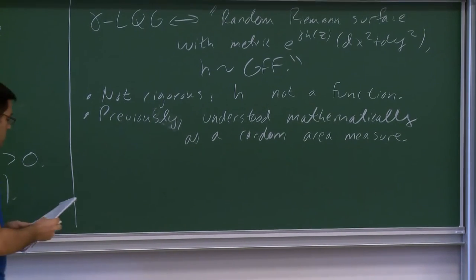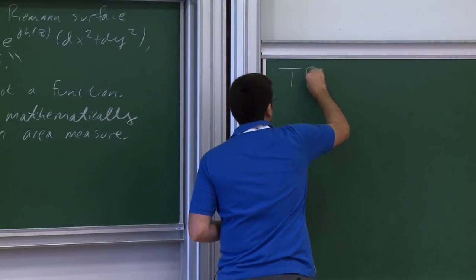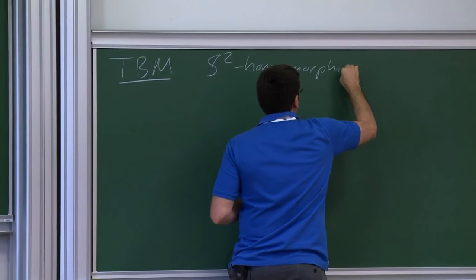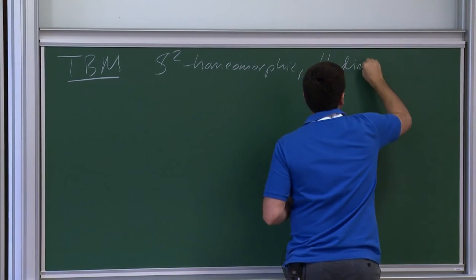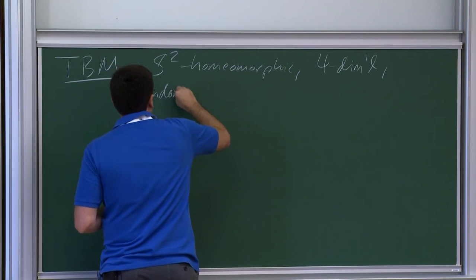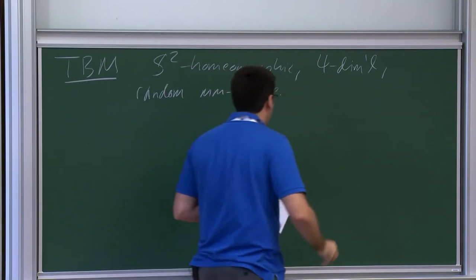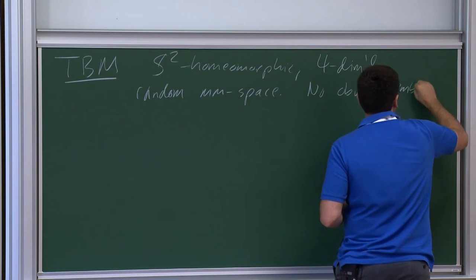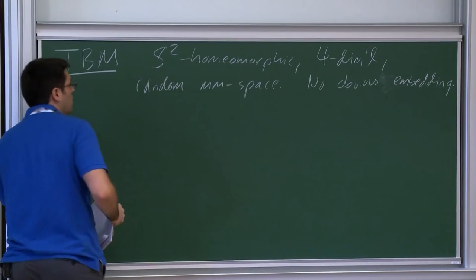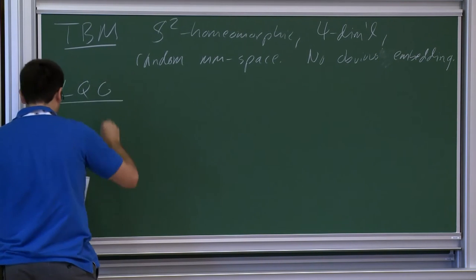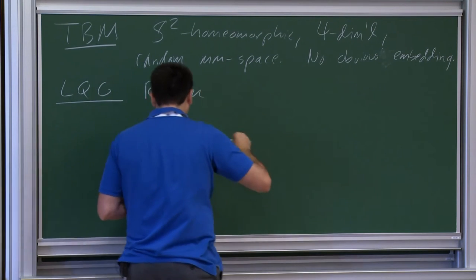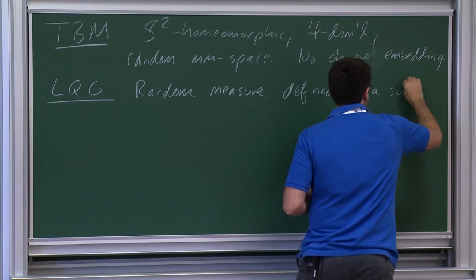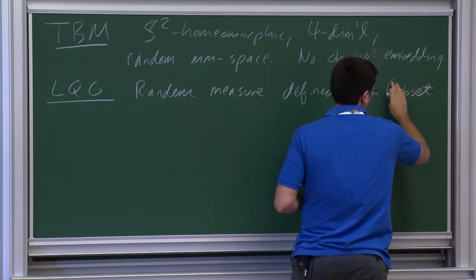So we have two objects. First, the Brownian map, which is the scaling limit of random planar maps — a sphere-homeomorphic, four-dimensional (in the Hausdorff sense) random metric measure space with no obvious embedding into Euclidean space. Second, Liouville quantum gravity, which at least to start off corresponds to a random measure defined on a subset of the plane or the whole plane. What we're going to try to do is unite these two things and say they are in fact the same.